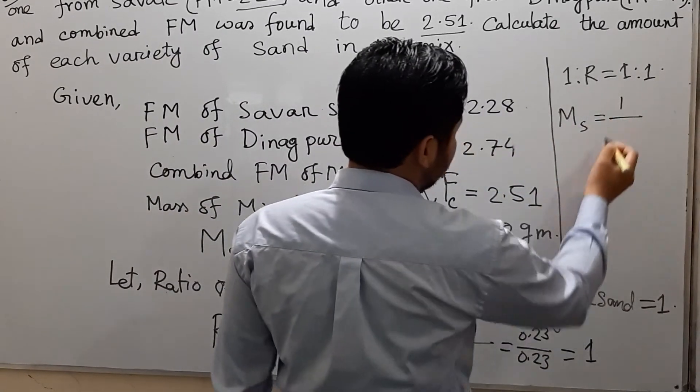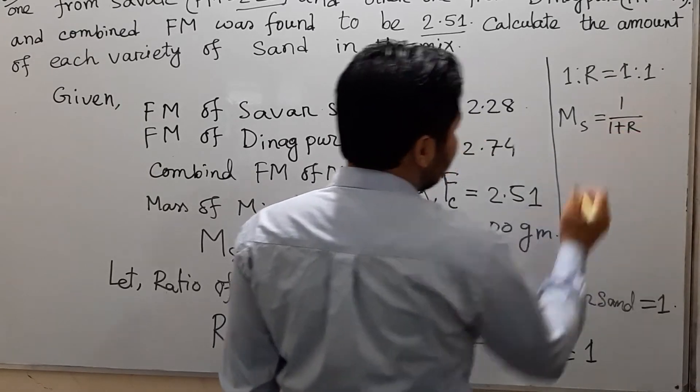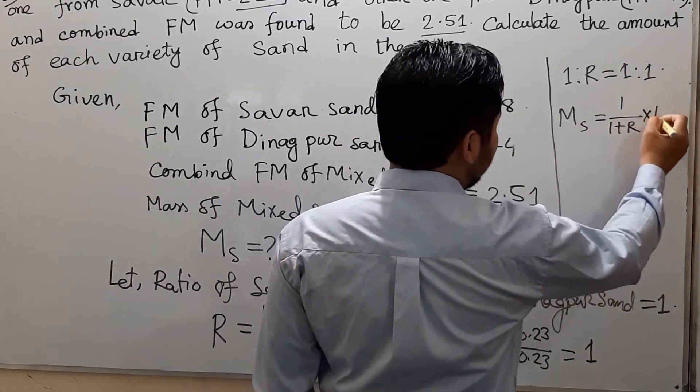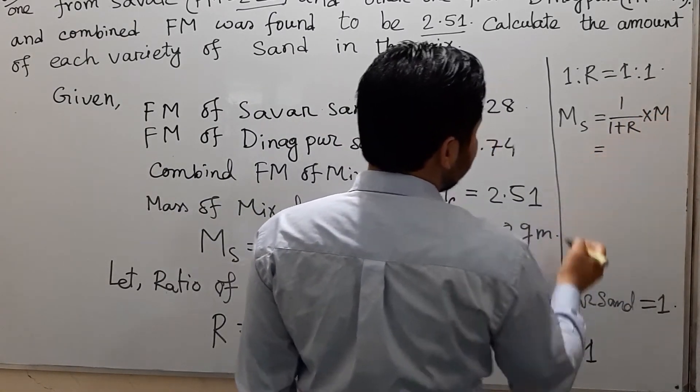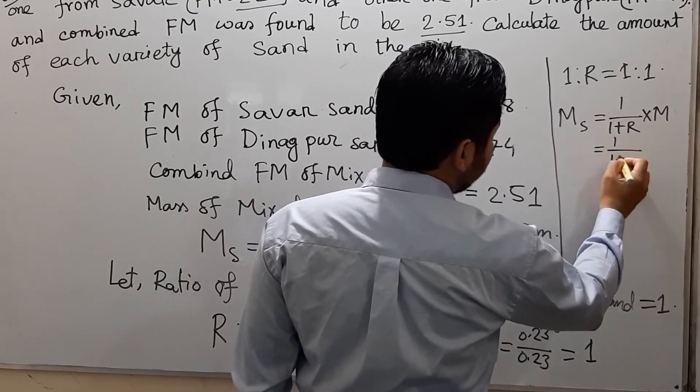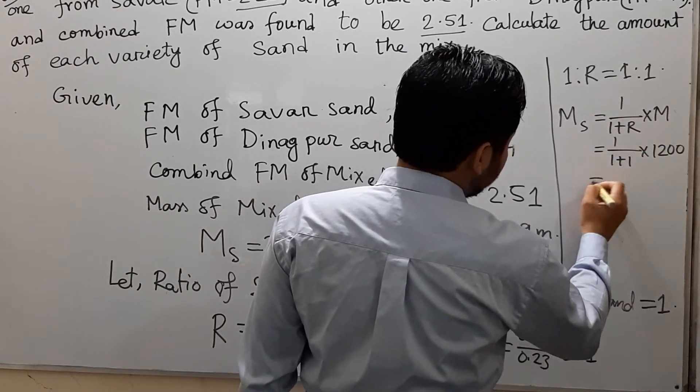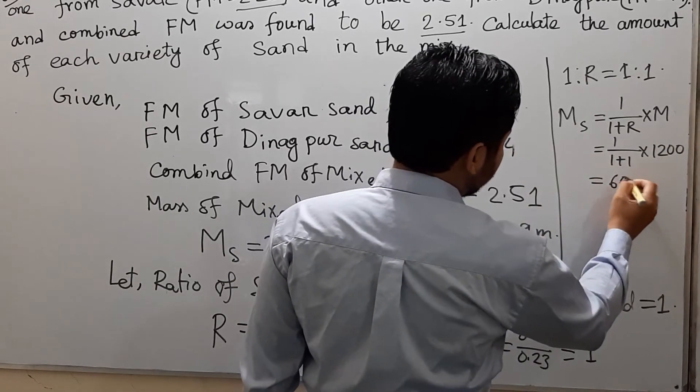Ms equals 1 divided by 1 plus R times total M, which is 1 divided by 1 plus 1 times 1200, which is 600 grams.